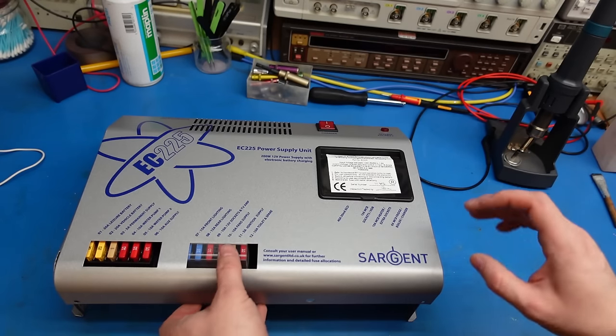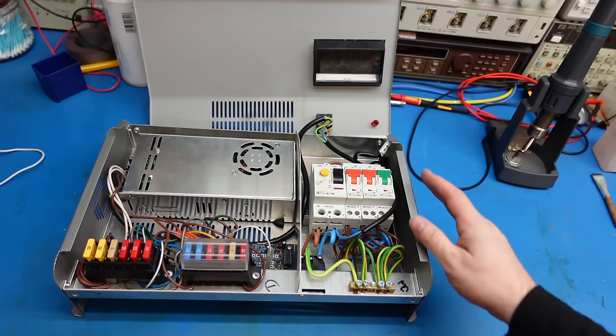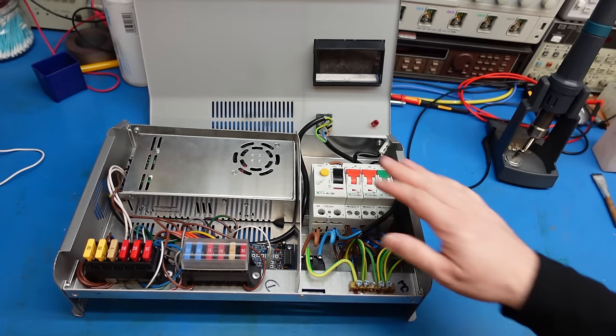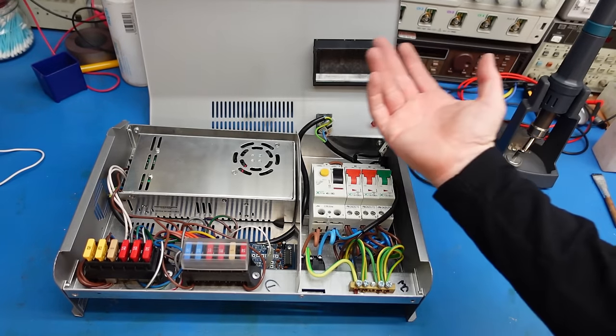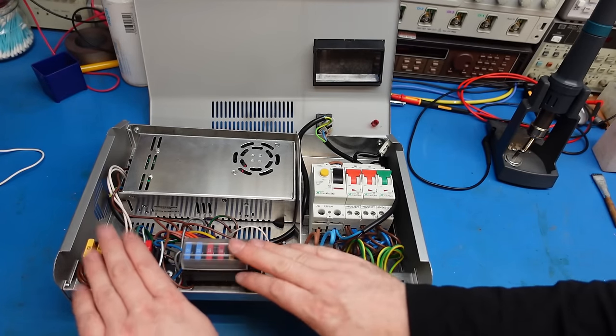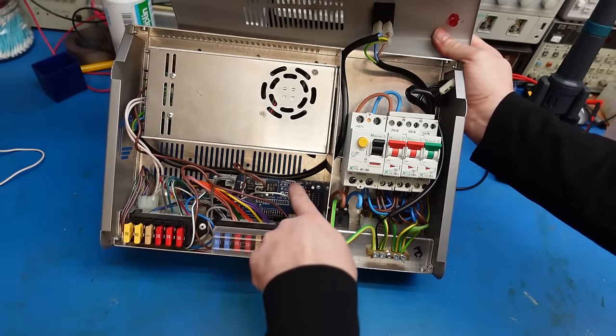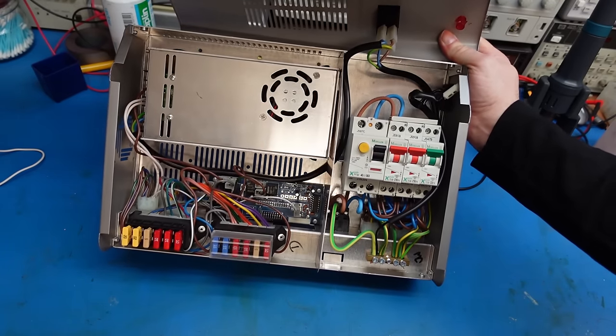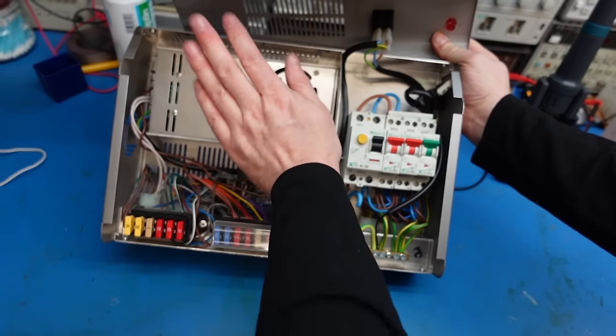It's a fairly straightforward unit inside, sort of four screws and the leads off. Here we've got the mains distributions, the circuit breakers and an RCD, always a good thing to have. This will be the actual power supply for the charging. It'll be 13.8 volt output charging lead acid batteries. There's a control circuit there with relays, so I don't think there's much in the way of anything too clever going on in that part. My money is the fault is in there.